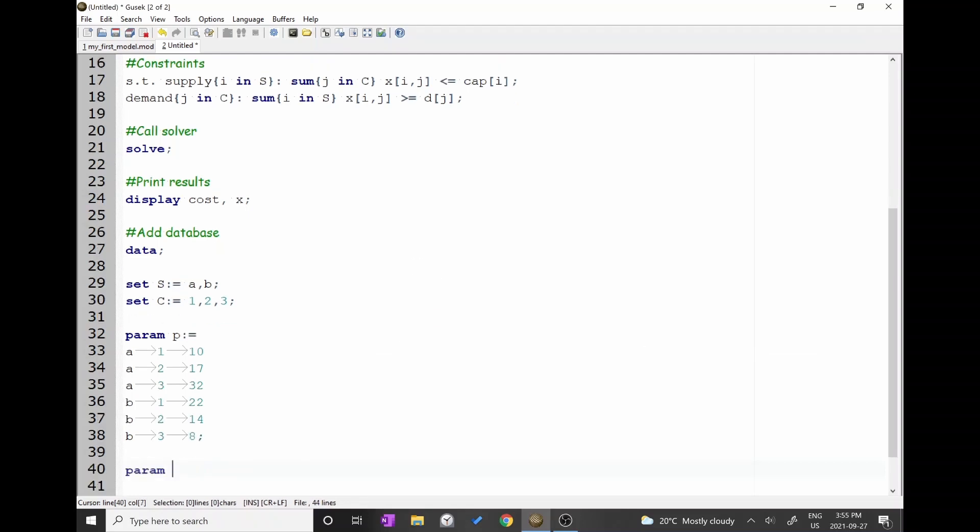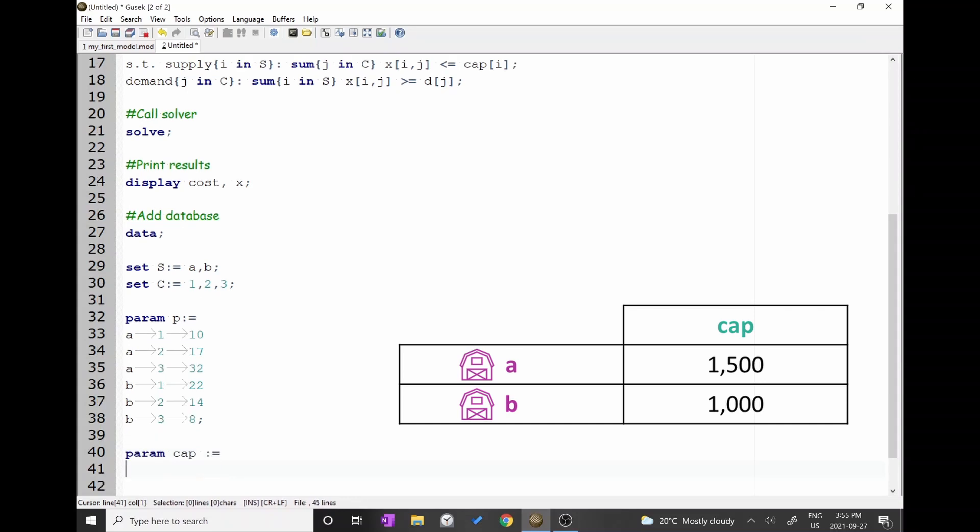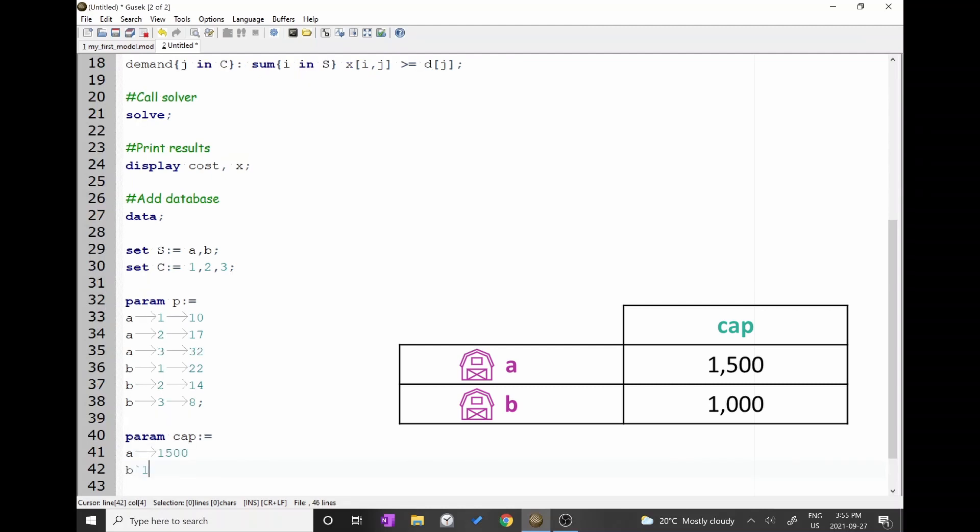Let's write the capacities of the suppliers. Type param cap, colon, equal, and press enter to go to the next line. Then, write A, tab, 1,500, enter, B, tab, 1,000, semicolon.